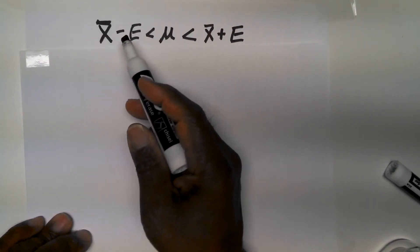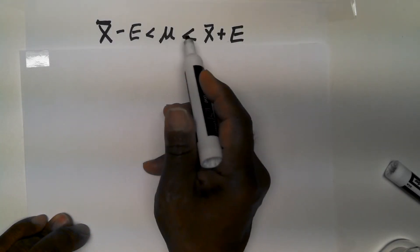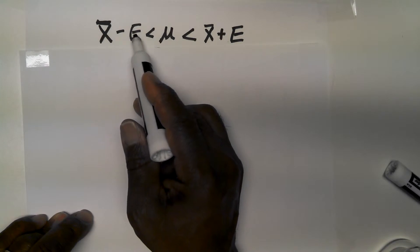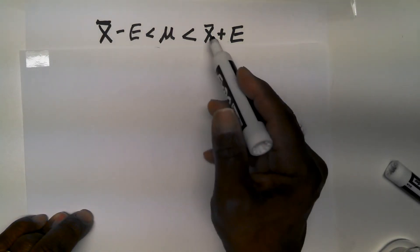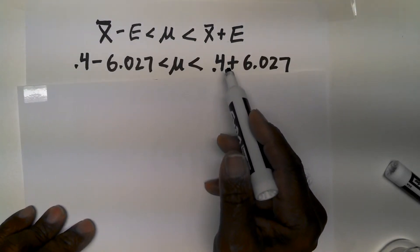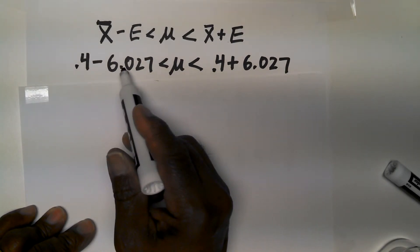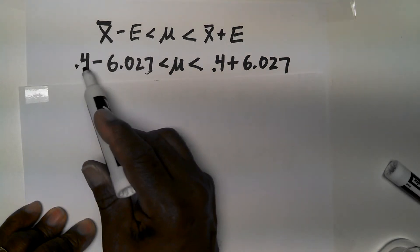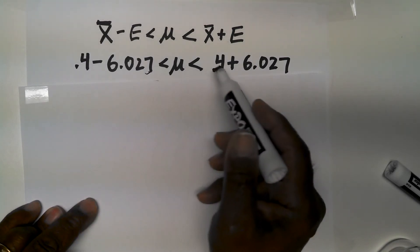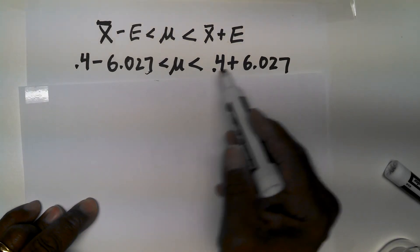Now that we have the error, we substitute it into the confidence interval formula. On the left, we subtract the error from the sample mean: 0.4 minus 6.027. On the right, we add the error to the sample mean: 0.4 plus 6.027. We are estimating that the population mean lies between those two values.